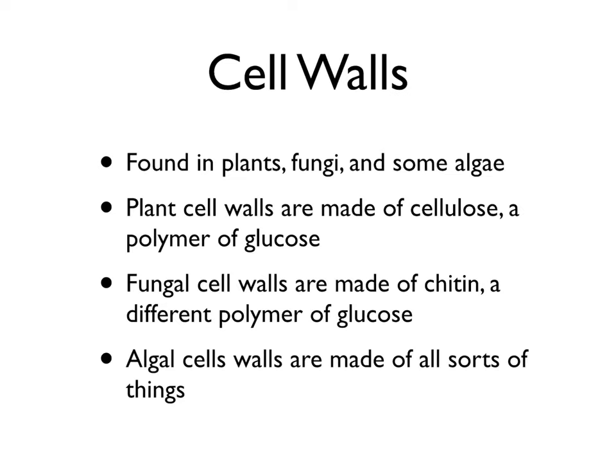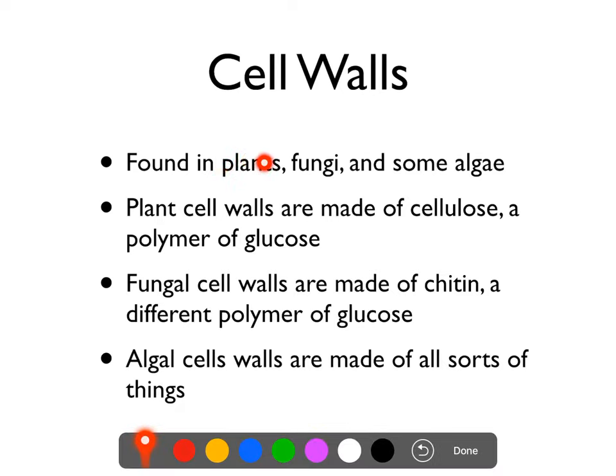First, you've got cell walls. Just like bacteria and archaea, eukaryotes can have cell walls. Plant cells are obviously not microbes, but pretty much all plant cells have cell walls, made out of cellulose, which is a special polymer of glucose.